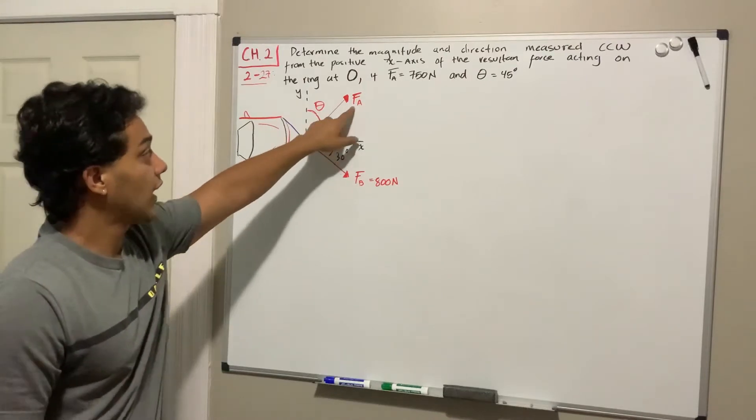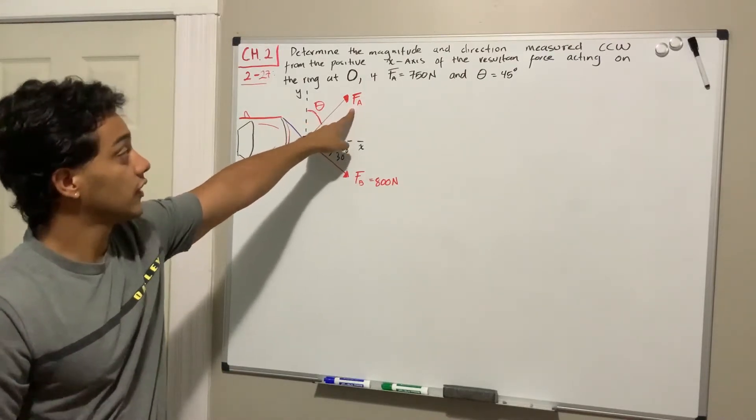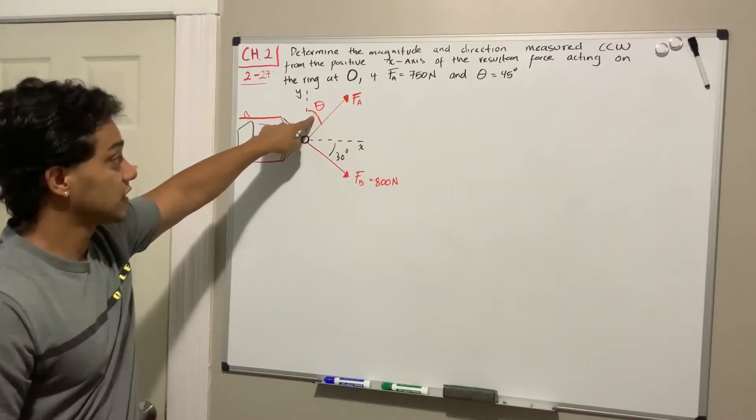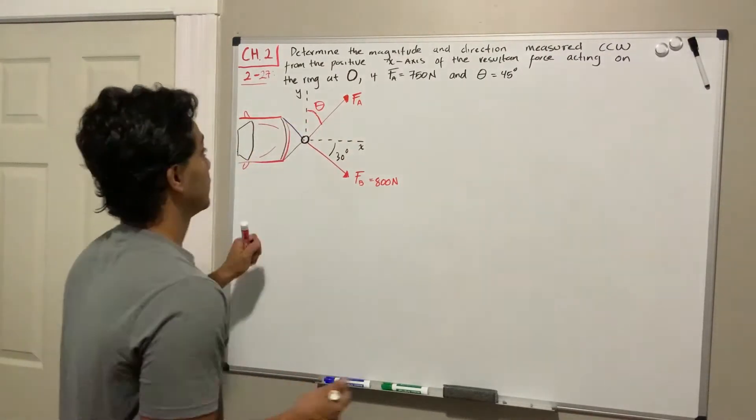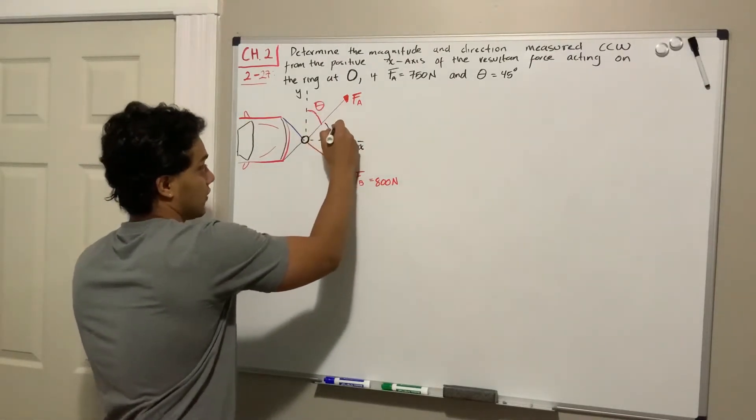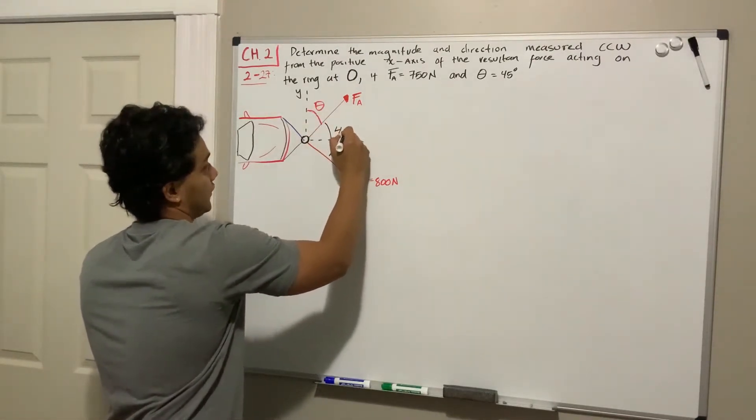Determine the magnitude and direction measured counterclockwise from the positive x-axis of the resultant force acting on the ring at O. If the force F_A is equal to 750 N and this angle theta is equal to 45 degrees, this guy over here is also 45 degrees.